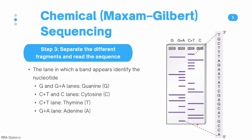Reading this gel from the bottom — the 5' end — the first band is found in the G plus A lane only, indicating the first nucleotide is A. The following bands are found in the C plus T and the C lane, and we have two bands, so the next bases in the sequence are C and C. And we just continue through this gel — at the top there is a band in the C plus T lane only, telling us the next base is T.